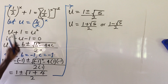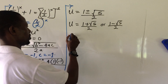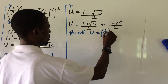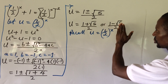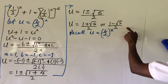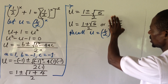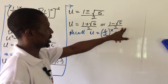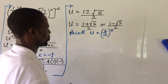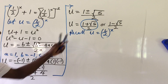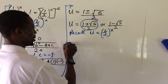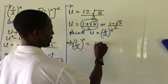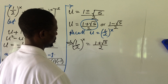Recall we said let u equal 1 all over 2 to the power of x. Looking at the two roots from our quadratic equation, the second root, 1 minus root 5 all over 2, will give us imaginary roots and so it is rejected. We take only the golden ratio: u equals 1 plus root 5 all over 2. Putting this in place, we have 1 all over 2 to the power of x equal to 1 plus root 5 all over 2.